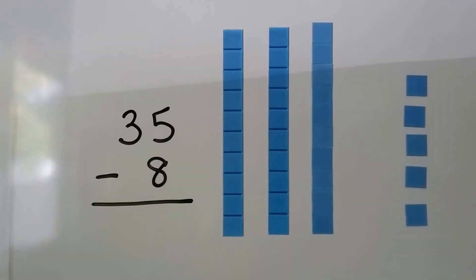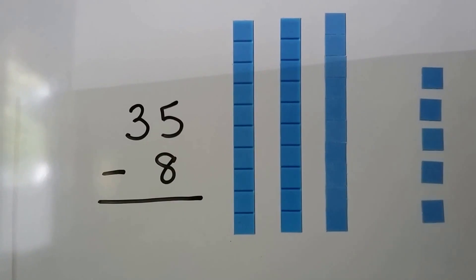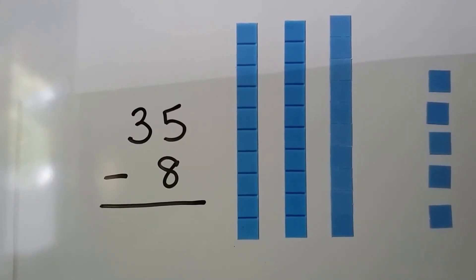We could either use pencil and paper or we could use the tens and ones models for this one. The 8 is larger than the 5, so we need to regroup.